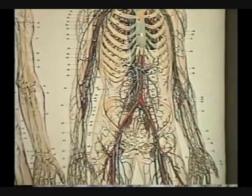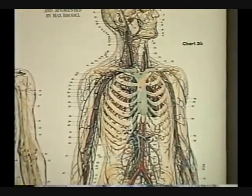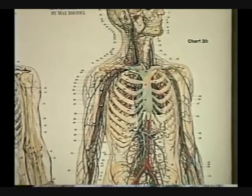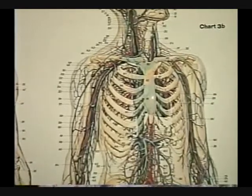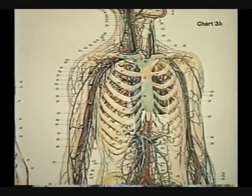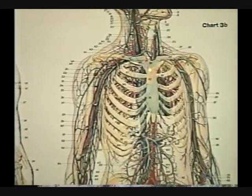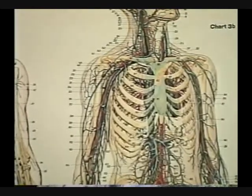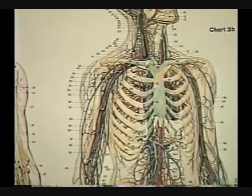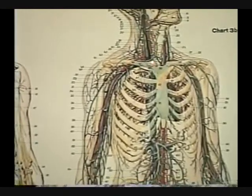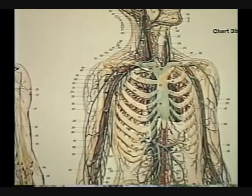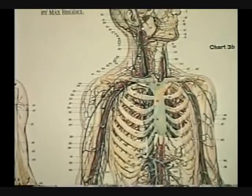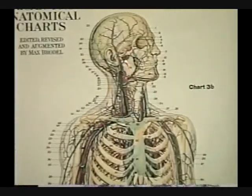Coming back up to the heart and going above it: coming out of the heart is the aortic arch. Off the aortic arch is a single vessel — the brachiocephalic. Brachiocephalic: brachium means arm, cephalic means head. The brachiocephalic bifurcates into the common carotid, which comes up and gives rise to the external carotid and the internal carotid.